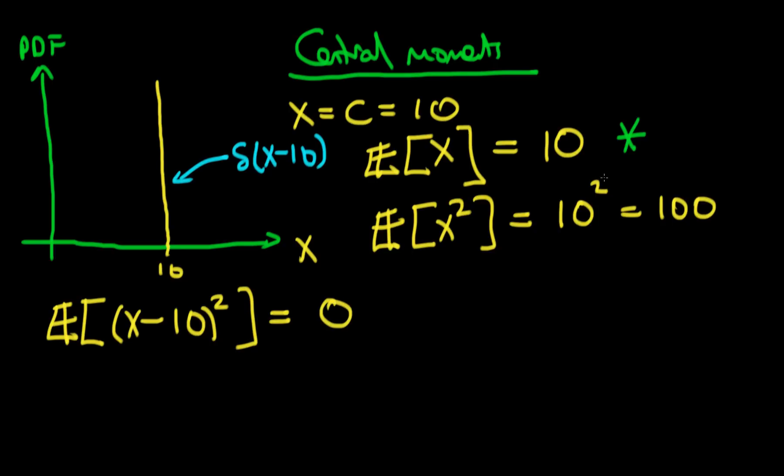And straight off using the first moment condition and the second moment condition we would straight away be able to see that this was just a constant at x equals 10. Whereas although you could reconstruct it from this second uncentered moment it's just a little bit more complicated to do that. So this second moment which is centered around the mean is what we refer to as the second central moment of the distribution. And another word for the second central moment of the distribution is just the variance of our variable x.